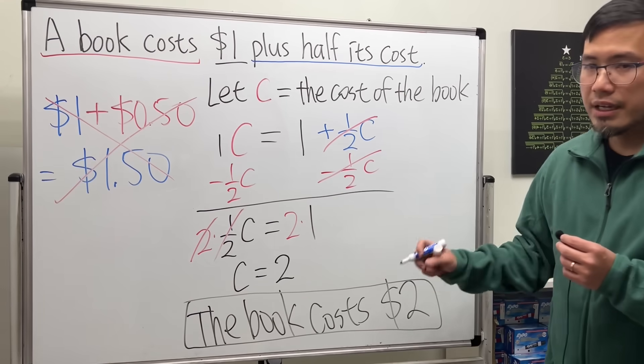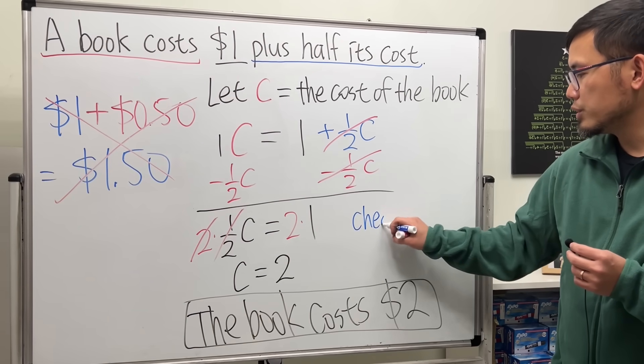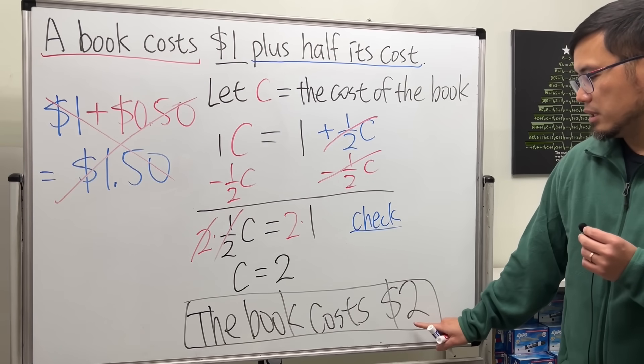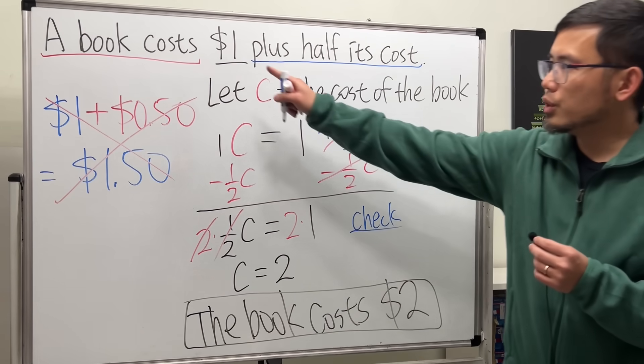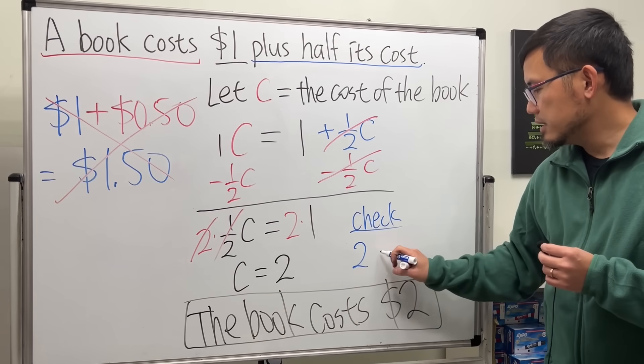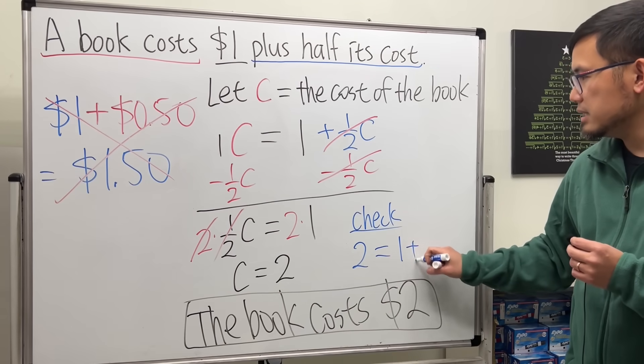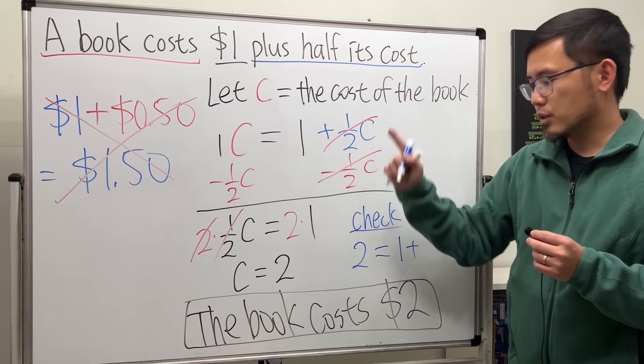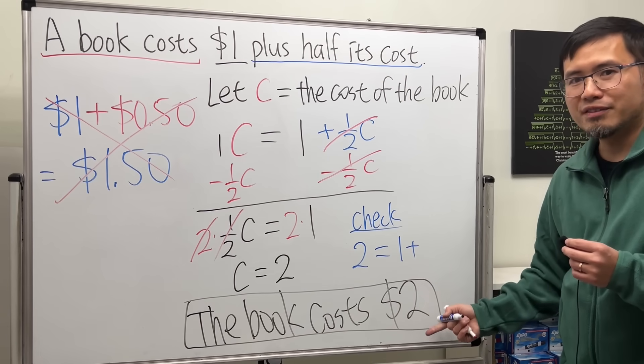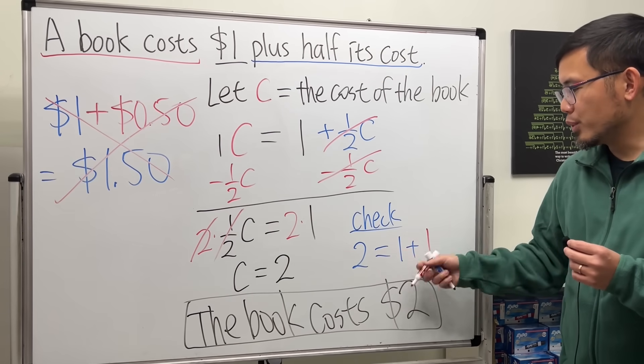And now let me just check the answer with you guys. Firstly, the book costs $2, yeah. And is this the same as $1 plus half its cost? What's half of its cost now? Half of 2 is 1. Is 2 equal to 1 plus 1? Sure thing, so this actually works.